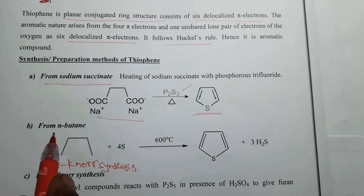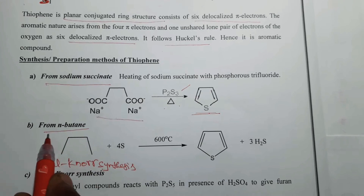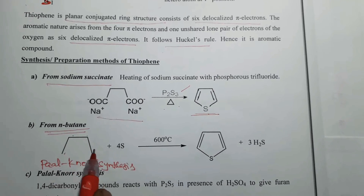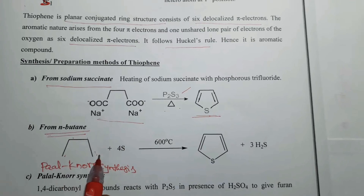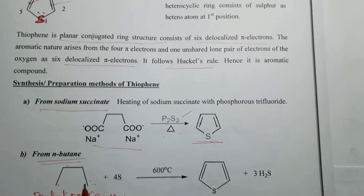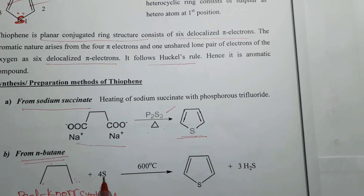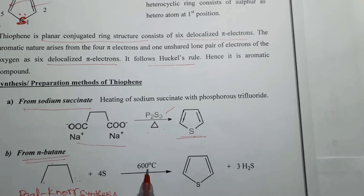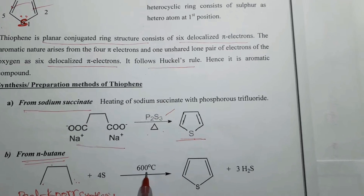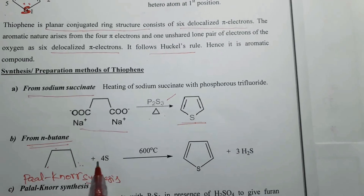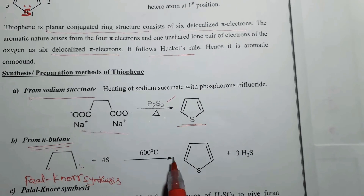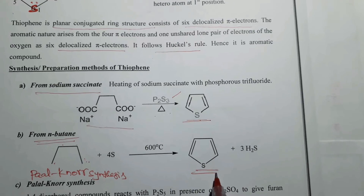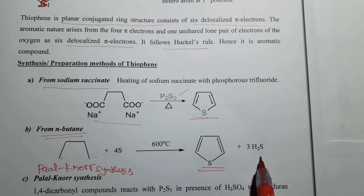Next preparation method: preparation from n-butane. n-Butane, which is a 1,2,3,4 carbon chain, on treatment with sulfur powder at high temperatures gives thiophene, by releasing of hydrogen sulfide.